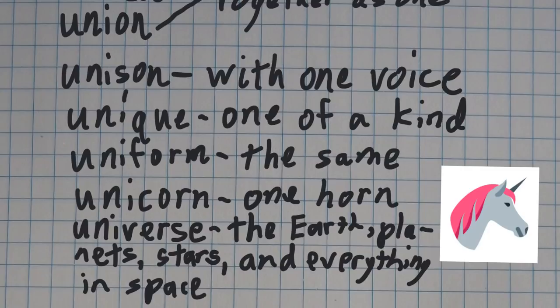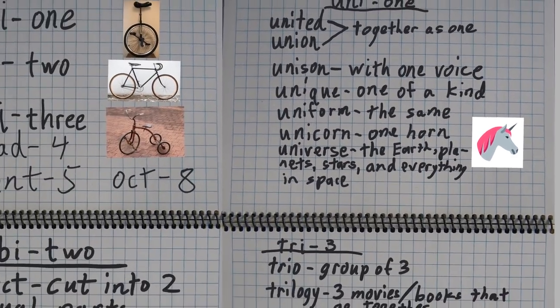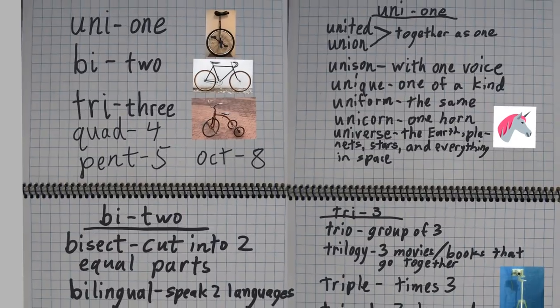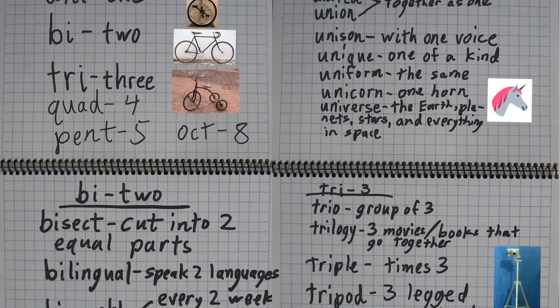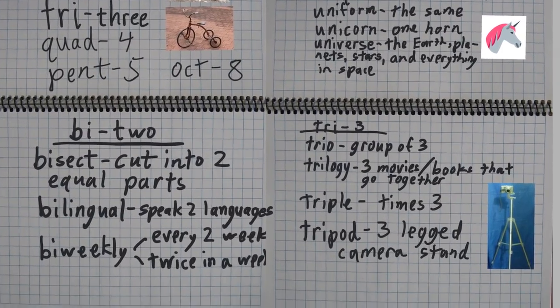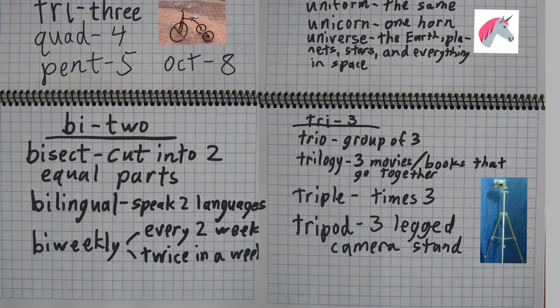That is it for this week. There's quite a bit going on. Even though the prefixes themselves are simple, the words have a lot of different meanings. Let me add one quick note: October used to be the eighth month. On the ancient calendar, October was the eighth month. That's why it's called October, and oct means eight.